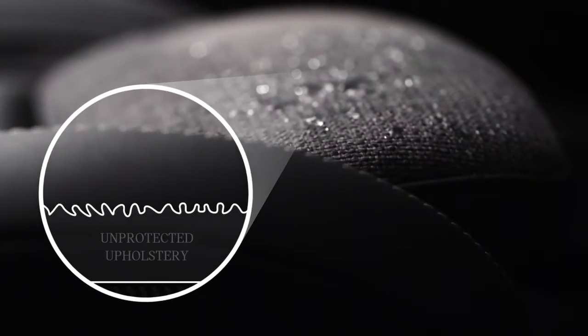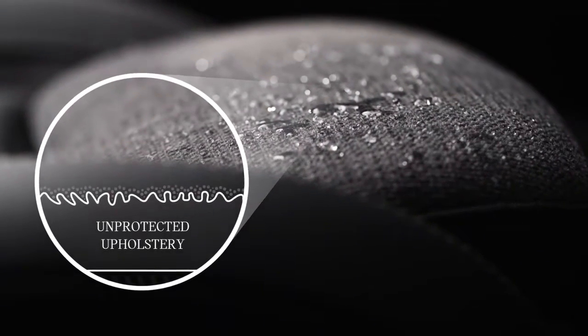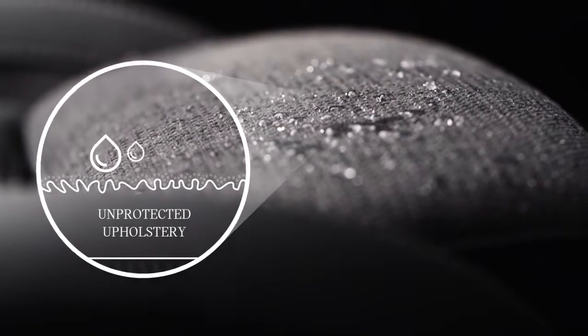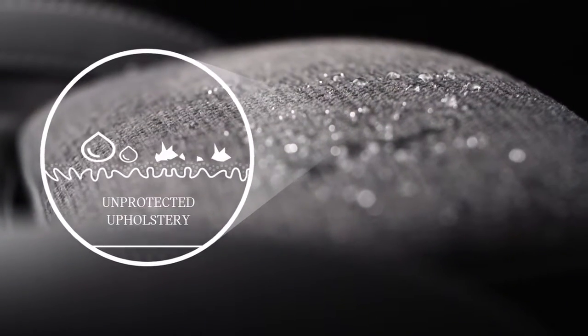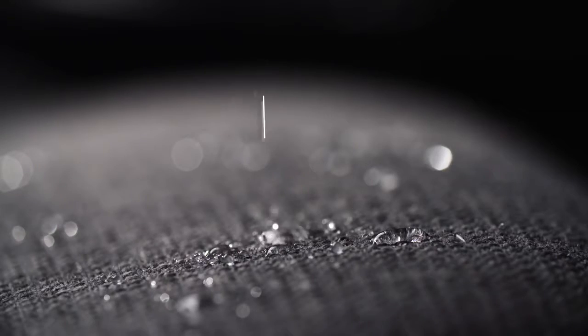Inside, Stain Guard coats each fabric fiber with an invisible barrier that shields against spills, dirt, grease and oil. Spillages can easily be wiped off or vacuumed away.